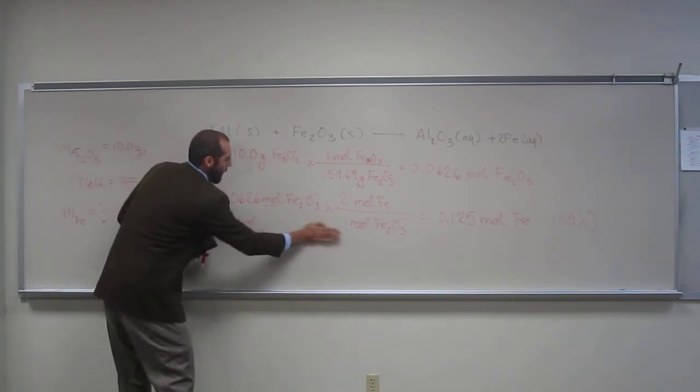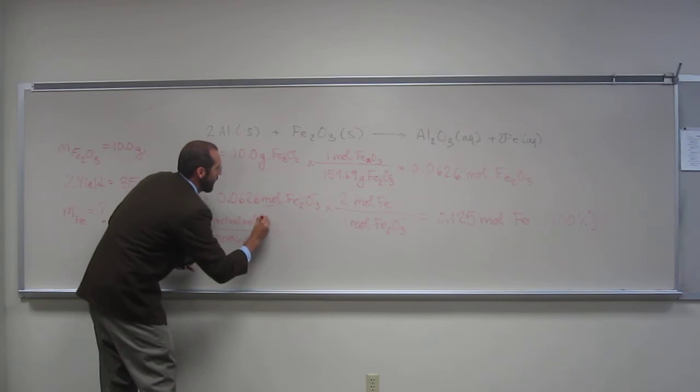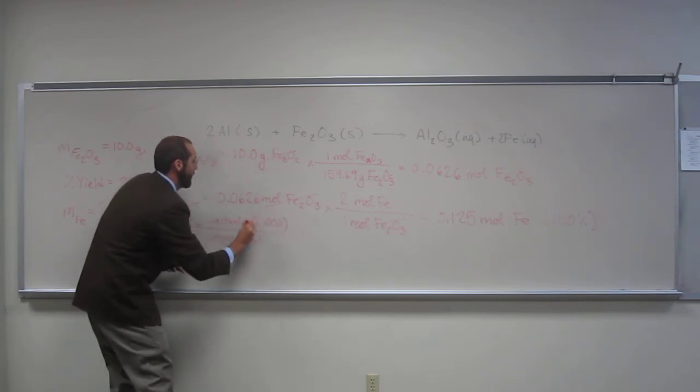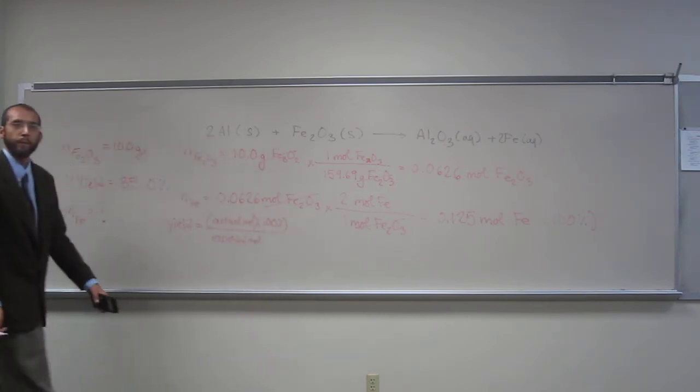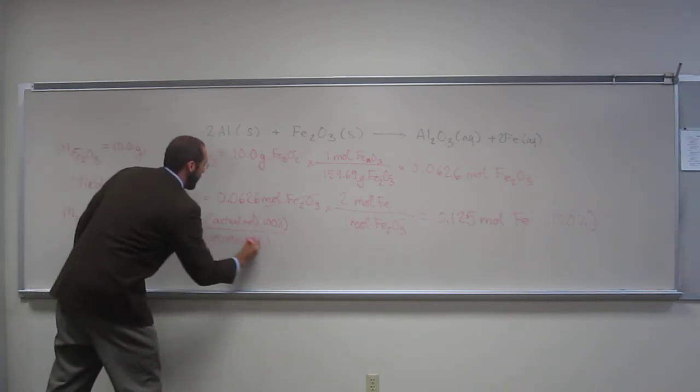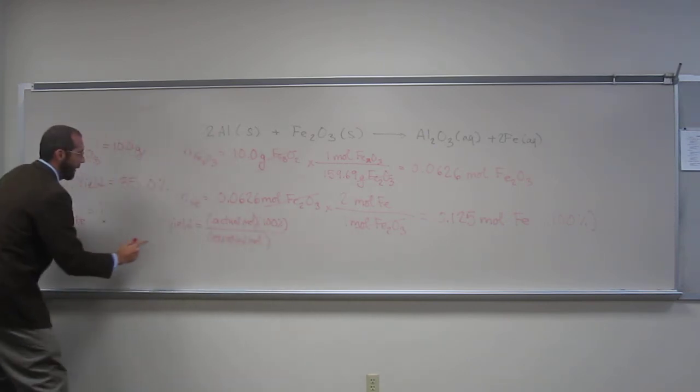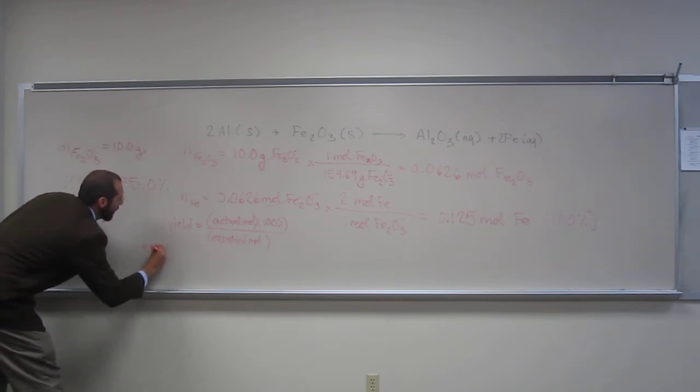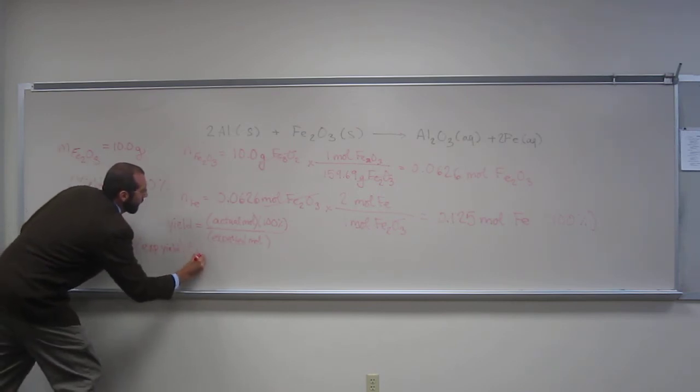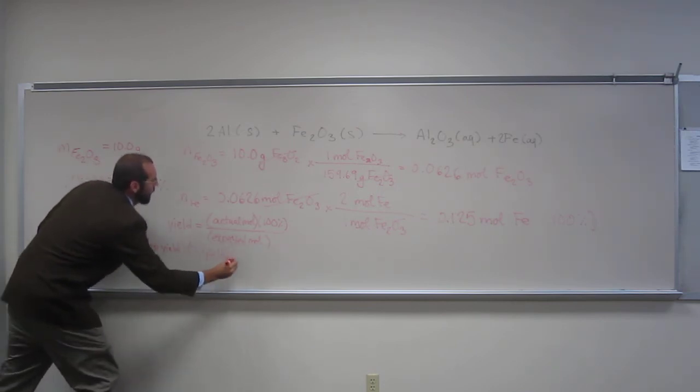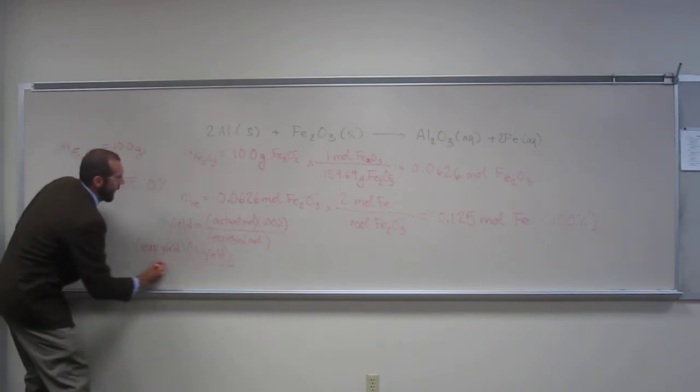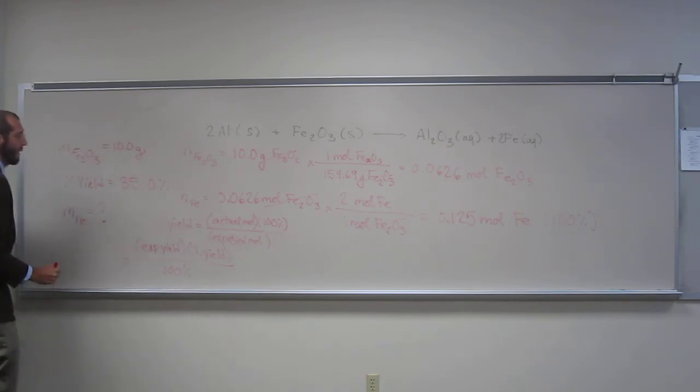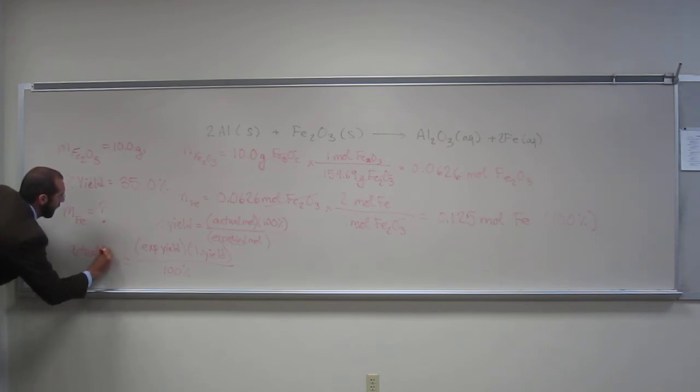So, let's just rearrange this equation to account for that. So, remember, we can kind of make this, if it helps you to think about things this way, we can kind of just do this. So, when we do that, we are going to multiply both sides by expected yield. So, expected yield times the percent, maybe percent sign or whatever, yield, divided by what? Good job. About 100%. And that gives us what? The actual yield.